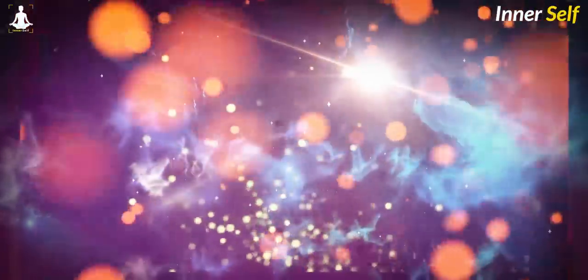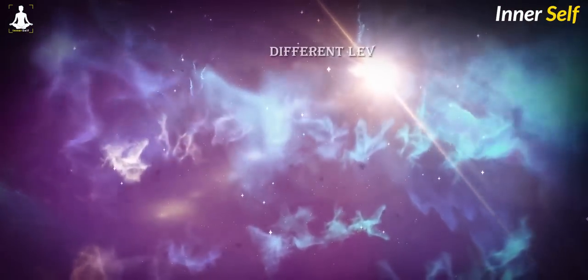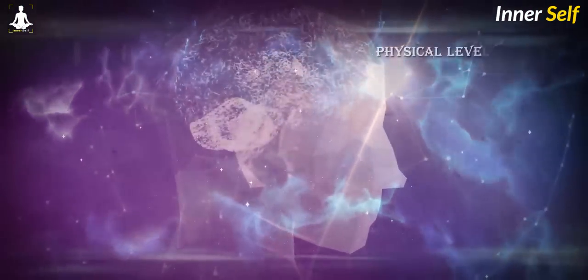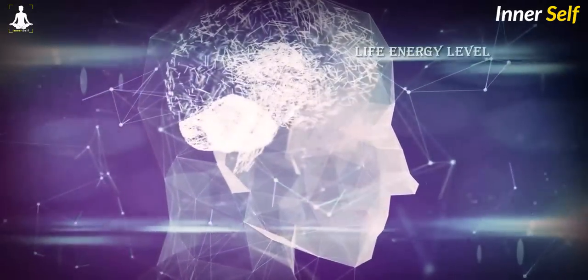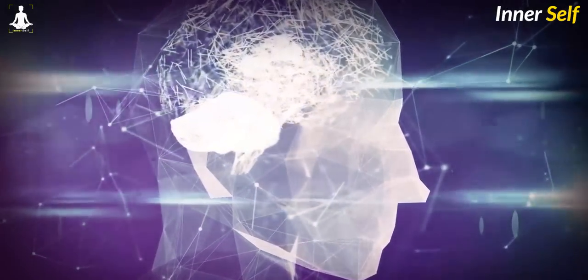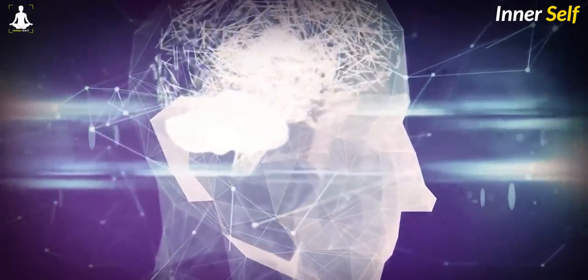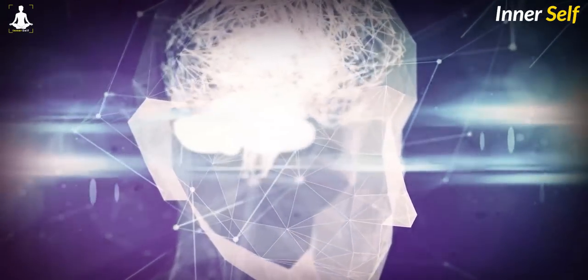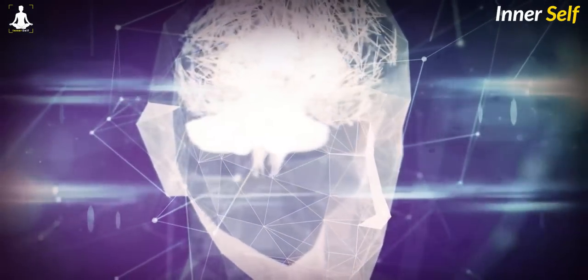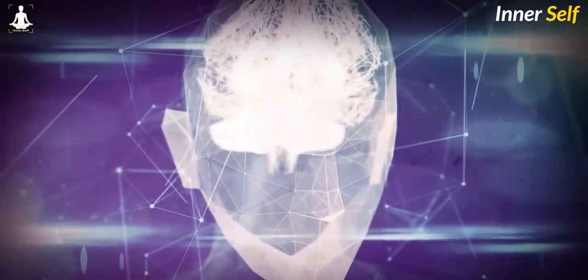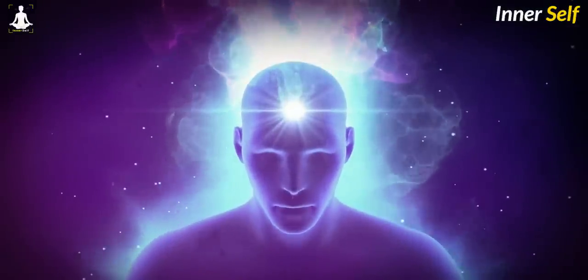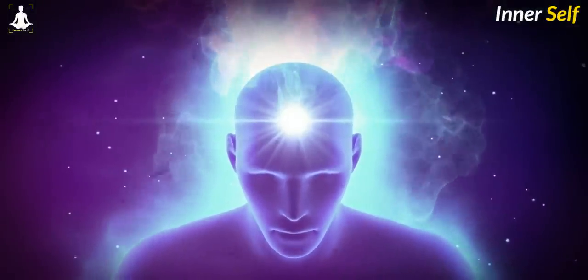What you find in many classical traditions is that they will talk about different levels of creation. So there's the physical level. There is the etheric life energy level, that in China would be called chi, or in Japan would be called ki, or in India would be called prana. Greeks would call it the ether. So this etheric vital force energy is above that of the physical. Then there are consciousness levels, beginning with what we call in the West the astral level.